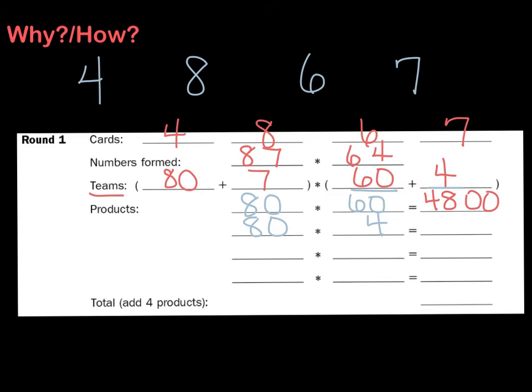My second problem, I've got 8 times 4 as my basic fact, is 32. And then I'm going to add my zero back in.